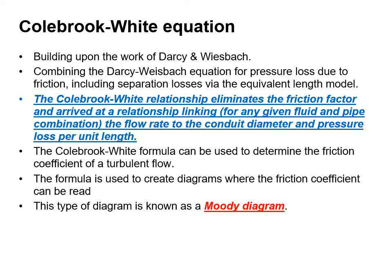The Colebrook-White equation built upon the work of Darcy and Weisbach, combining the Darcy-Weisbach equation for pressure loss due to friction including separation losses via the equivalent length model. The Colebrook-White relationship eliminates the friction factor and arrives at a relationship linking, for any given fluid and pipe combination, the flow rate to the conduit diameter and pressure loss per unit length. The formula can be used to determine the friction coefficient of a turbulent flow, and is used to create diagrams known as Moody diagrams where the friction coefficient can be read directly.